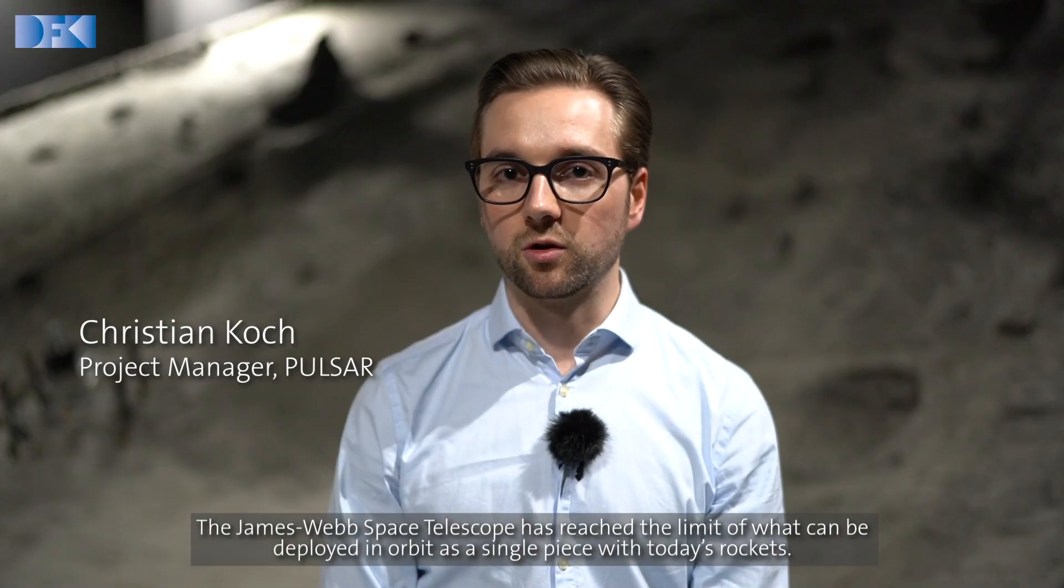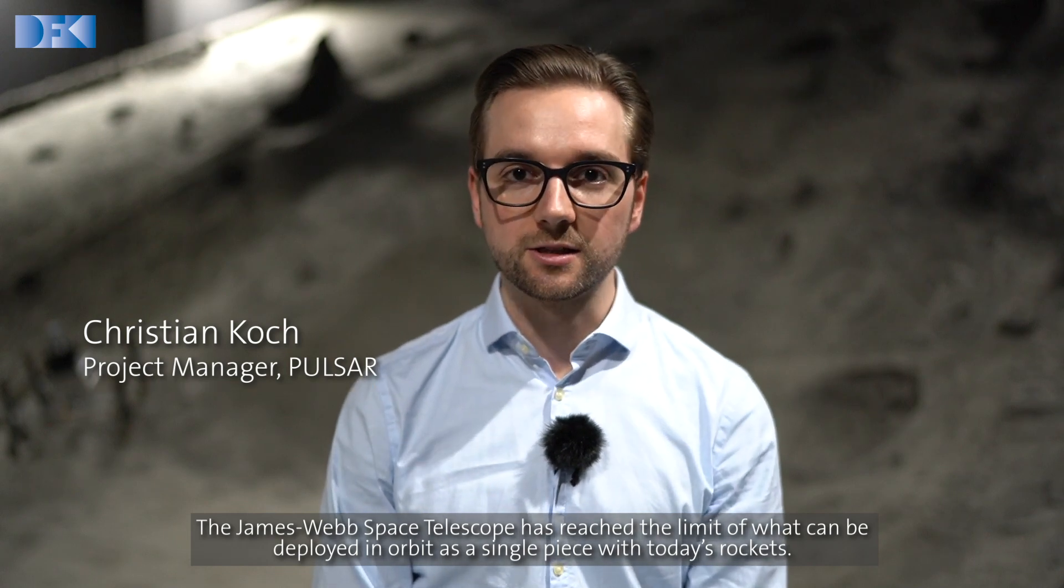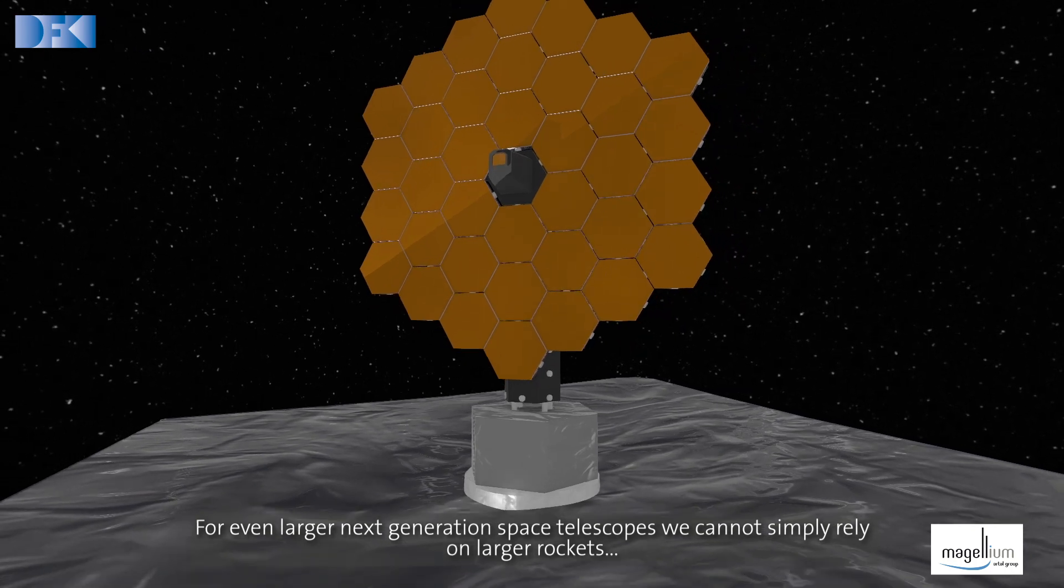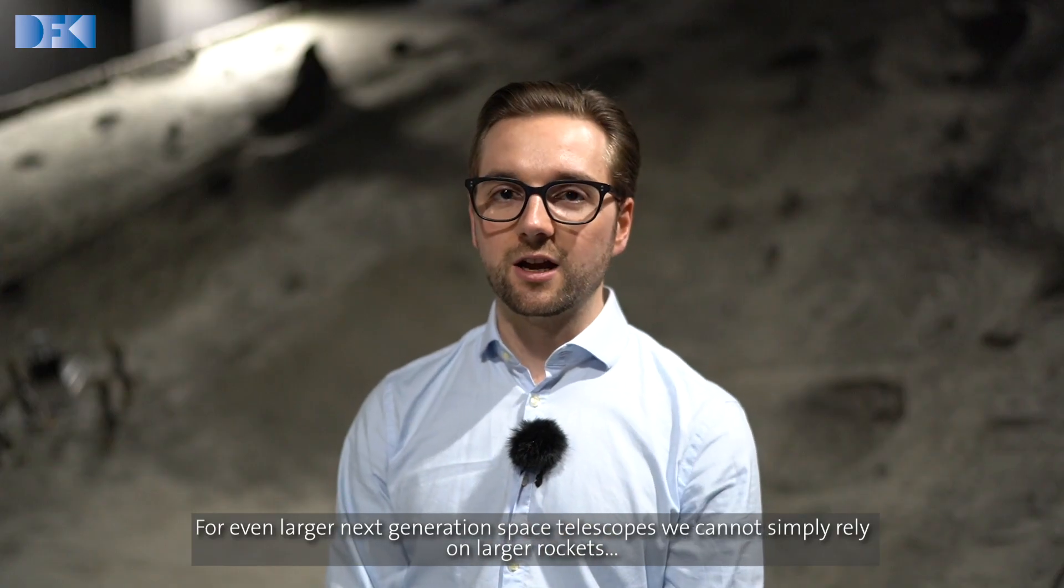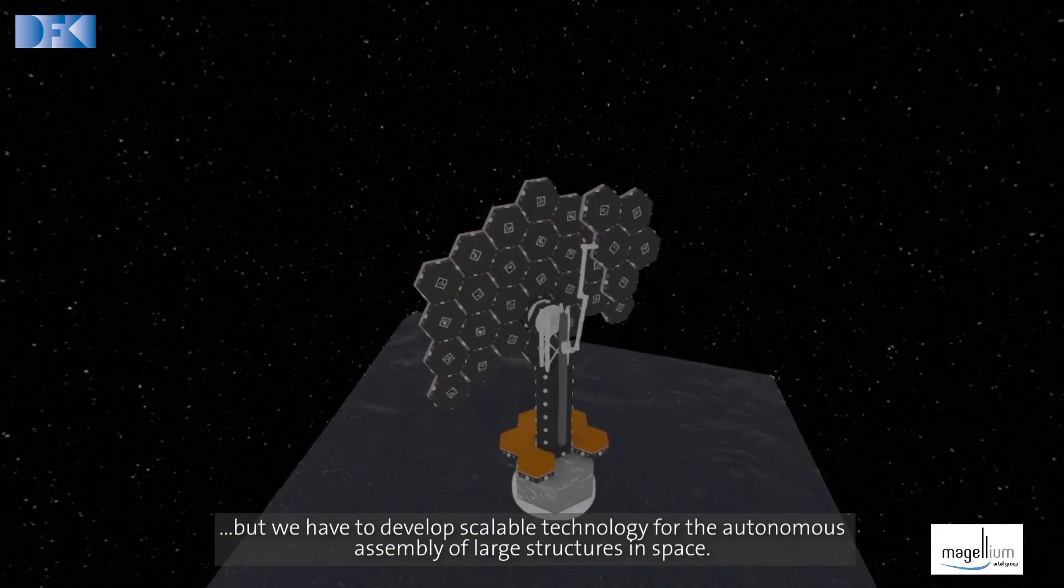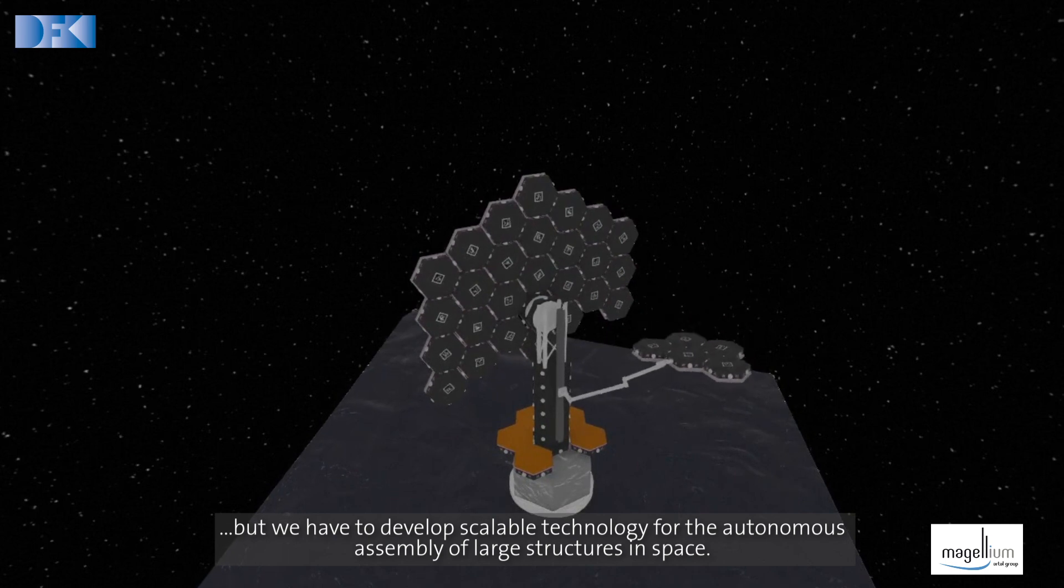The James Webb Space Telescope has reached the limit of what can be deployed in orbit as a single piece with today's rockets. For even larger next-generation space telescopes, we cannot simply rely on larger rockets, but we have to develop scalable technology for the autonomous assembly of large structures in space.